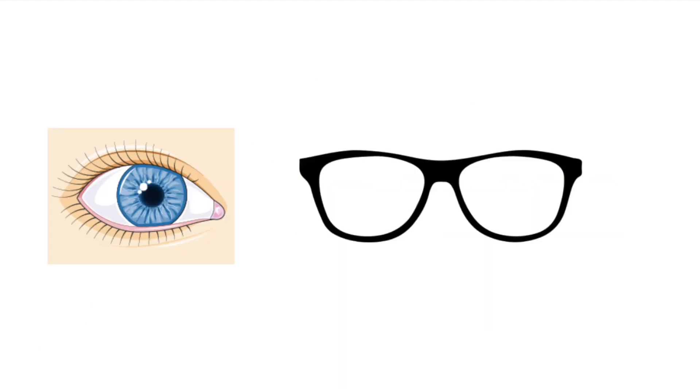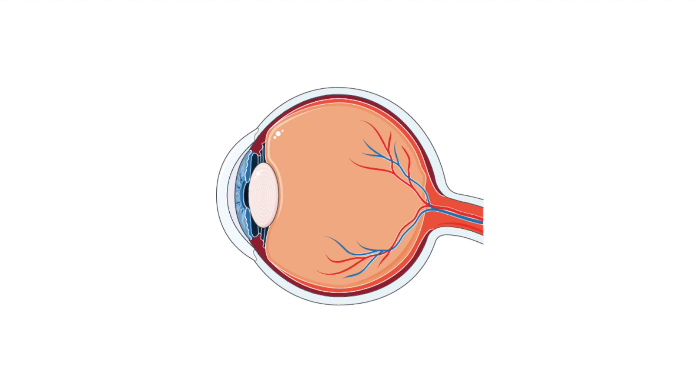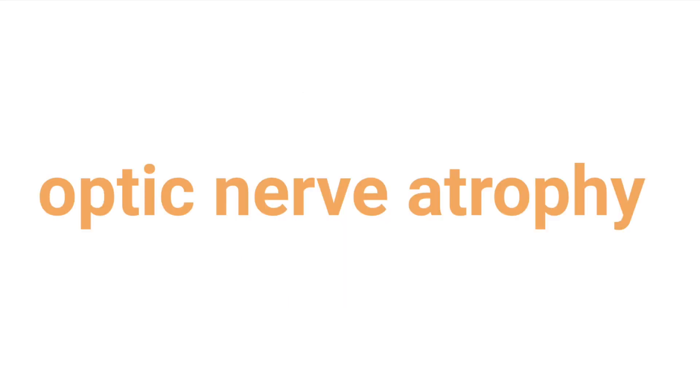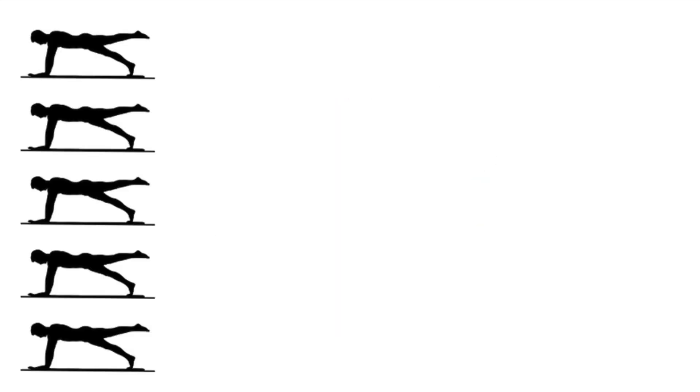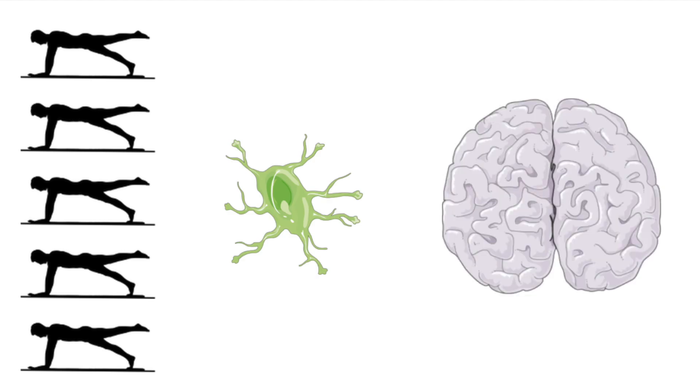Vision difficulties due to the degeneration of the optic nerve, called optic nerve atrophy. Epilepsy, which is characterized by seizures. Difficulty balancing and coordinating movements as a result of the deterioration of nerve cells in the brain, also known as cerebellar atrophy.